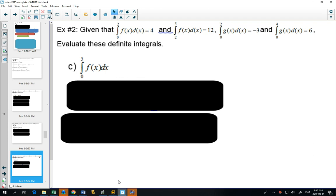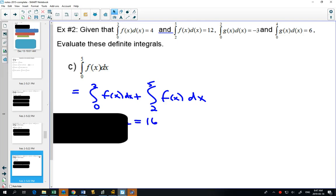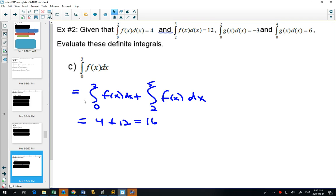0 to 5, we are not given 0 to 5, but we know 0 to 2 and 2 to 5. And so the area under the curve from 0 to 5 is the same as the area from 0 to 2 plus 2 to 5, and those values are there, so we can just add them together.